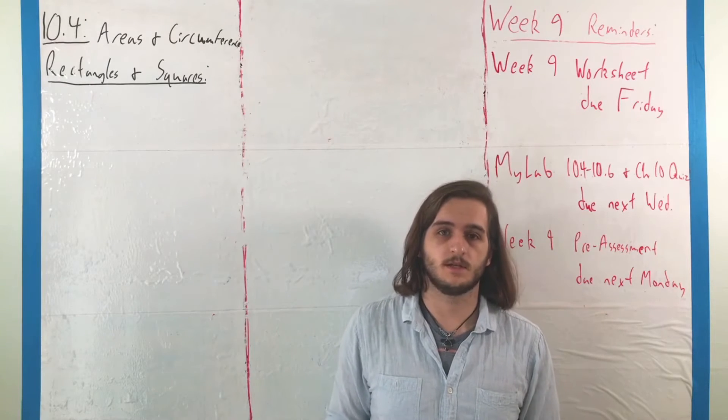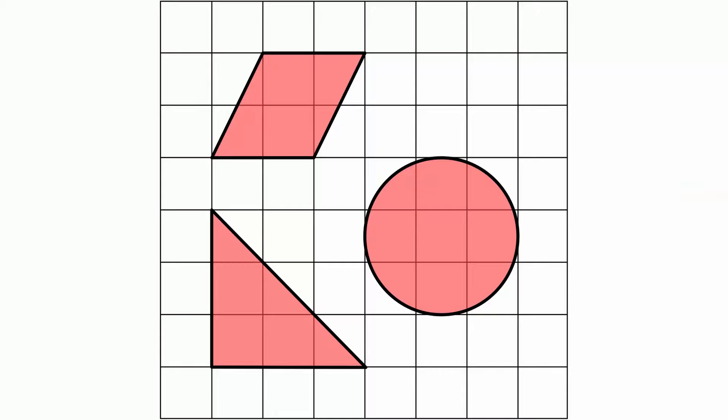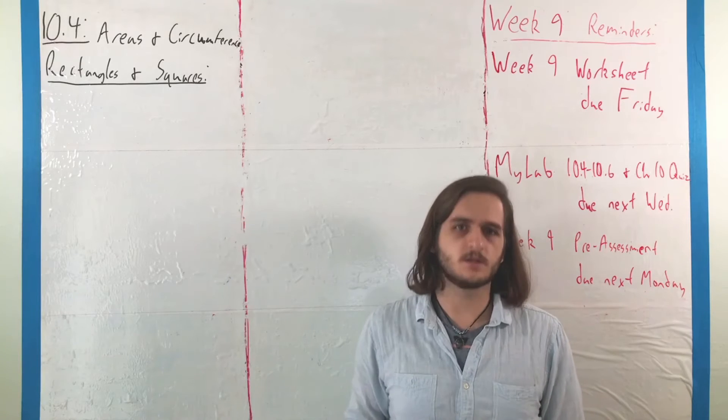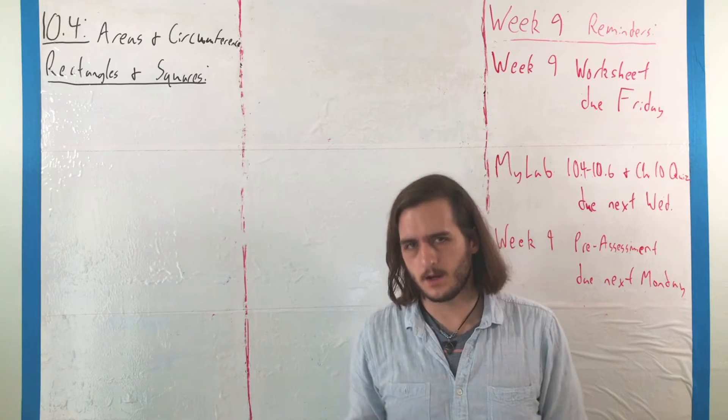What we're going to do now is move into section 10.4, keeping with polygons, now talking about the ideas of area and circumference, starting with rectangles and squares, our most basic units for talking about area.